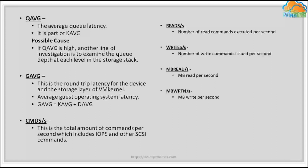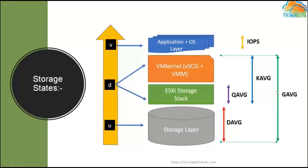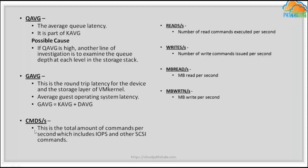GAVG is the combination of KAVG and DAVG — it represents the average guest operating system latency. DAVG resides at the physical/storage layer, while QAVG and KAVG are part of the ESXi layer. GAVG equals DAVG plus KAVG, giving you the total guest-observed latency.